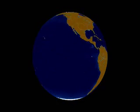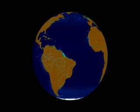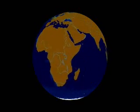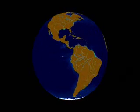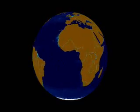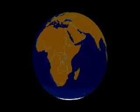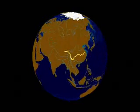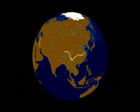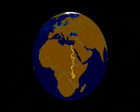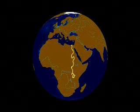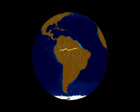Rivers, journeying down mountainous areas and meandering over flat plains, etch their way across the land. On the shores of these rivers and coastlines, humankind built communities — along the Yangtze in Asia, the Euphrates in the Middle East, the Nile in Africa, and the Amazon in South America.